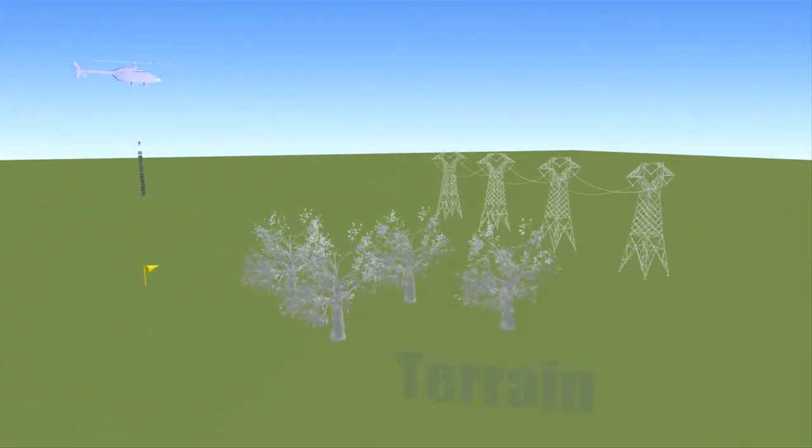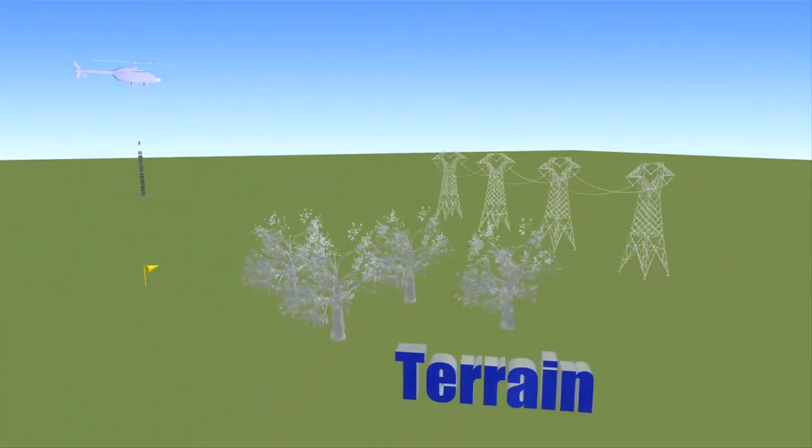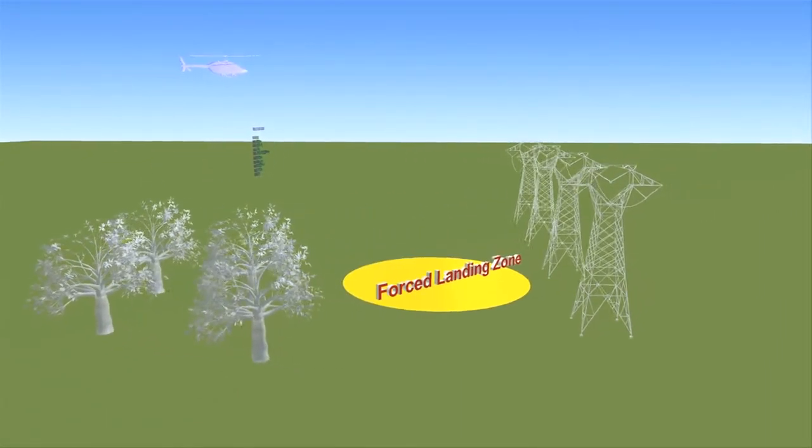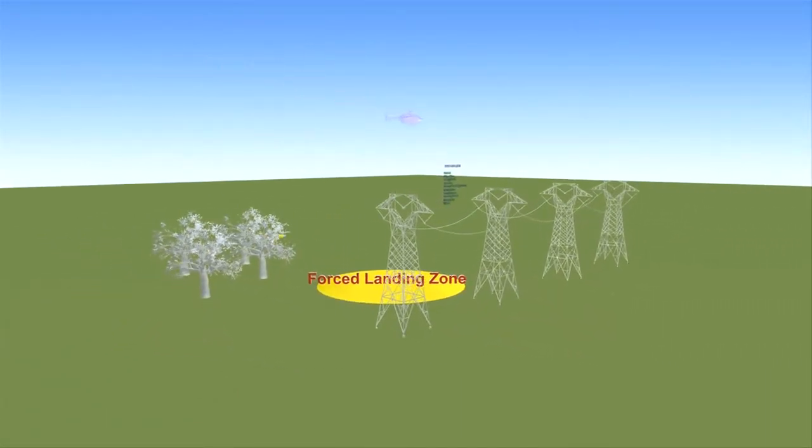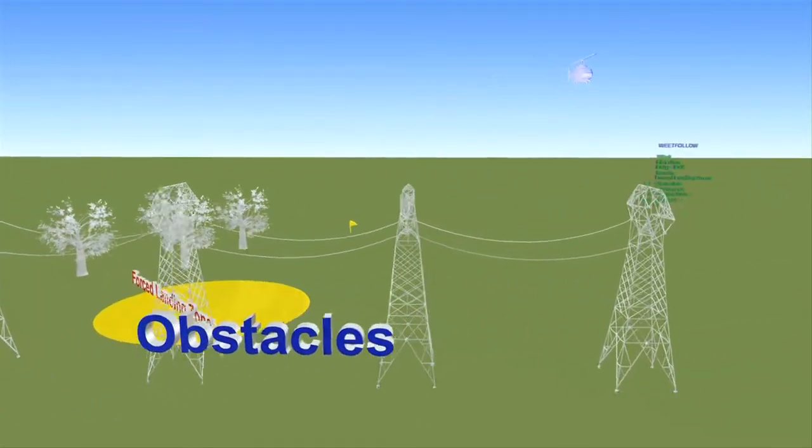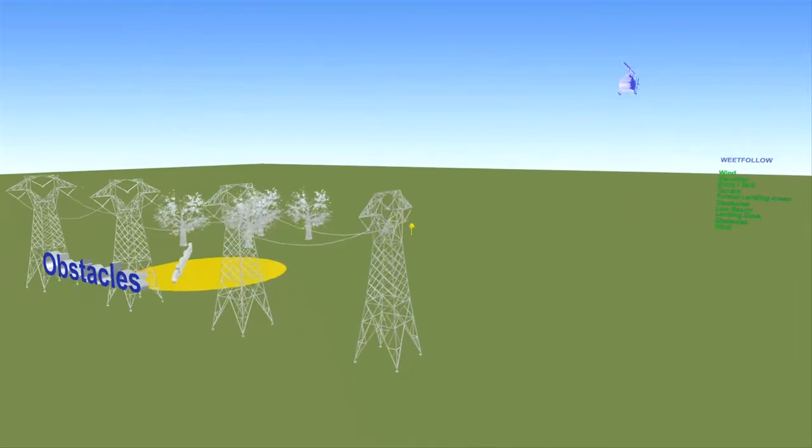Are there tree lines or other structures that may cause turbulent wind conditions? Evaluate the surrounding terrain for places to sit down in the event of an emergency. Look for signs of obstacles like hidden power lines, wires, poles, fence lines, vegetation, and structures.